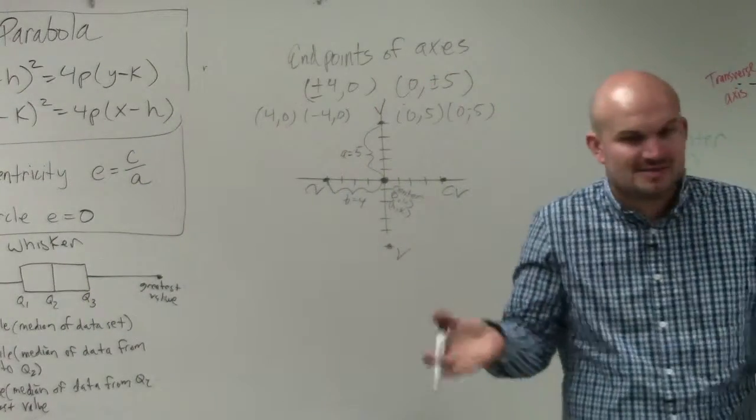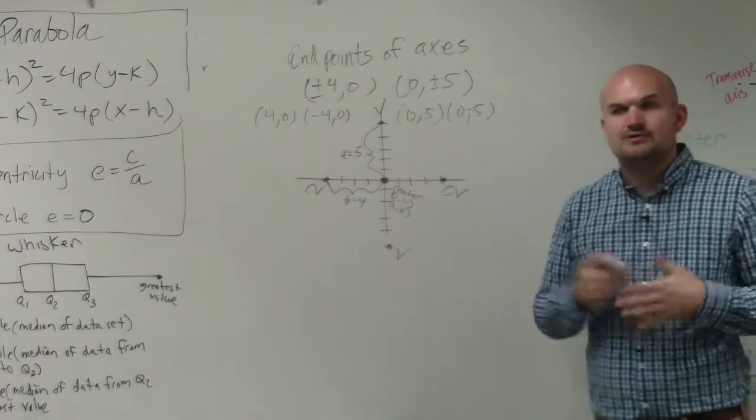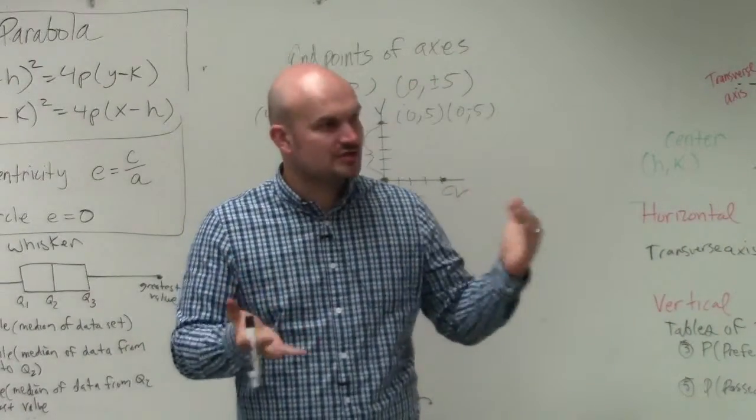And if you guys look at your notes from two class periods or last class period, you'll see something that's very similar to this. So remember, a is always larger than b for an ellipse. a is always larger than b for an ellipse.